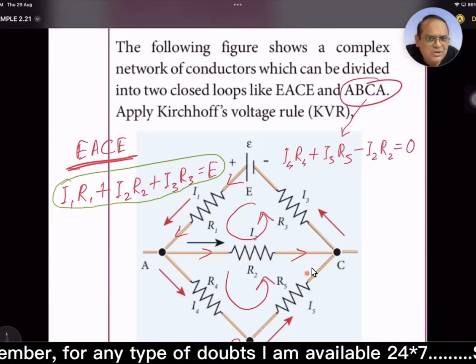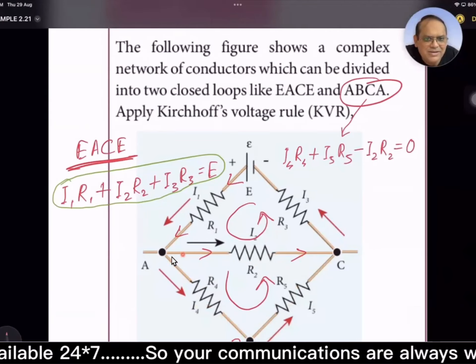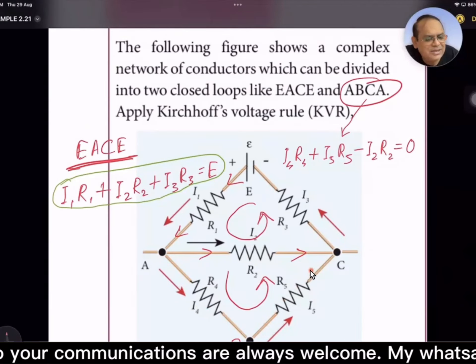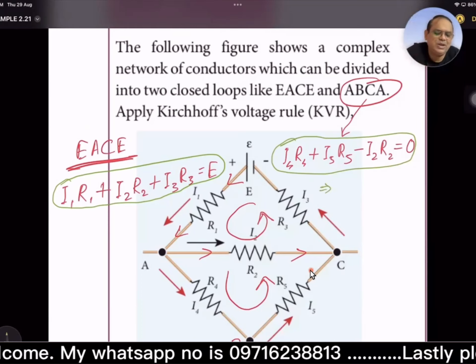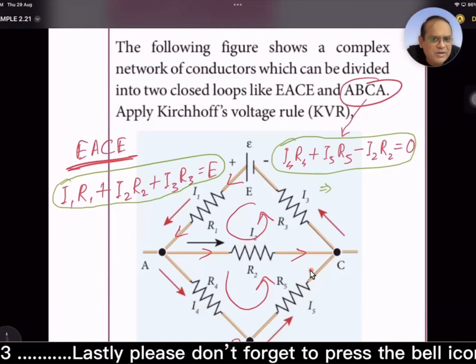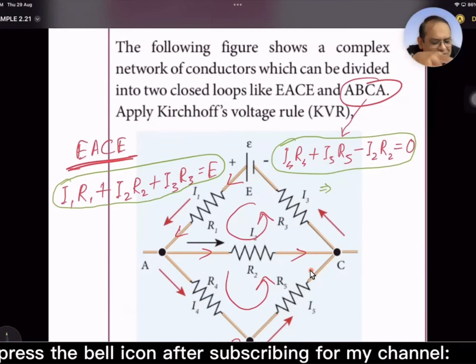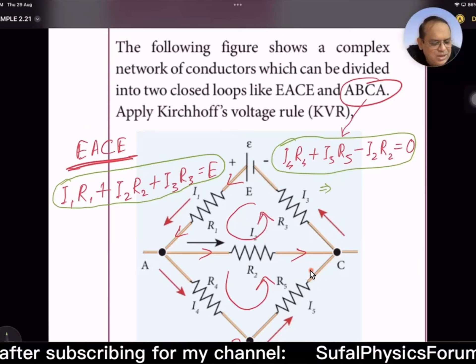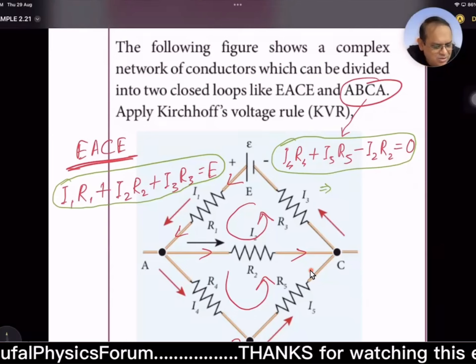This equals zero because in this closed loop there is no battery or cell connected. Hence it is zero. Through these two equations we could get the desired value, whatever is unknown.